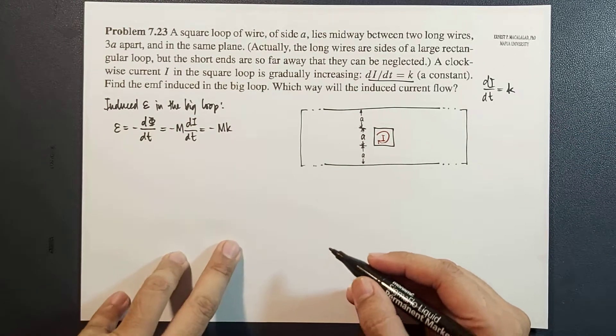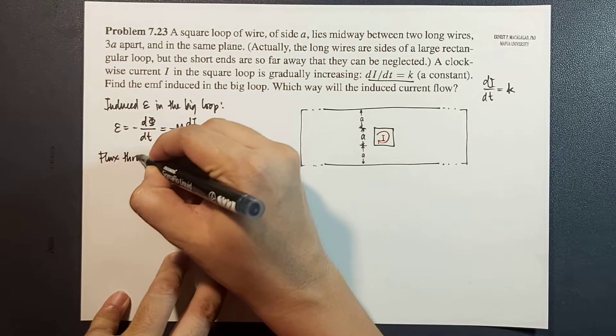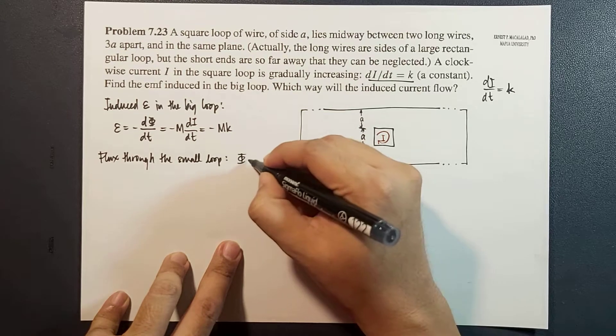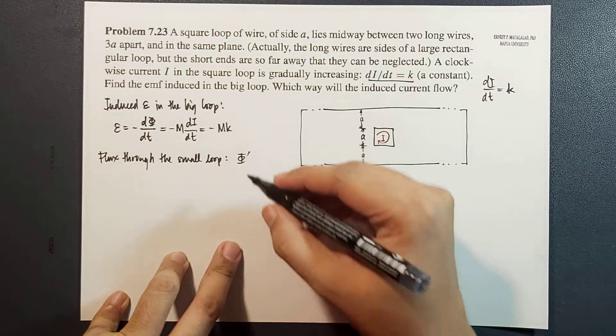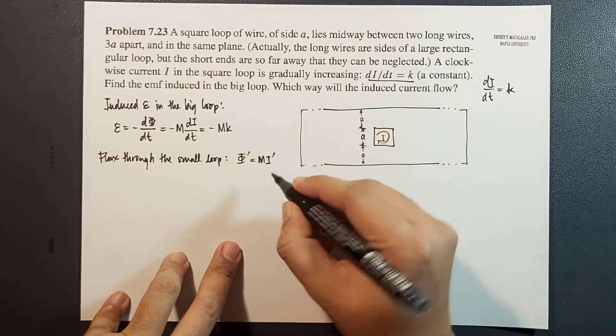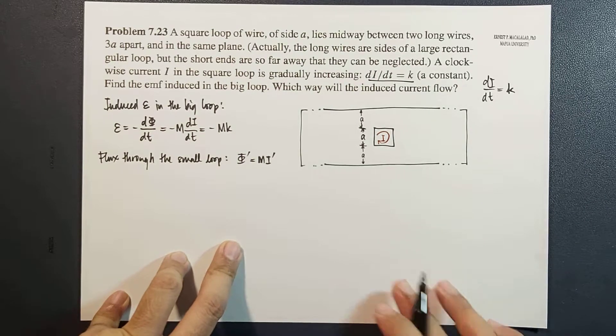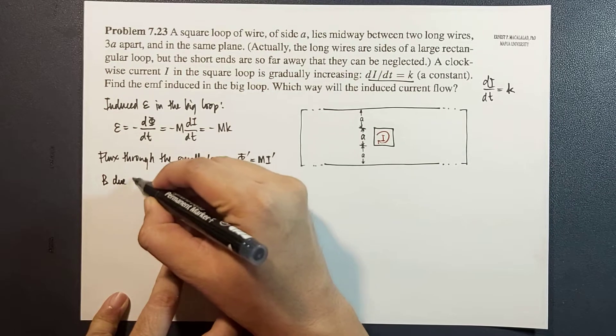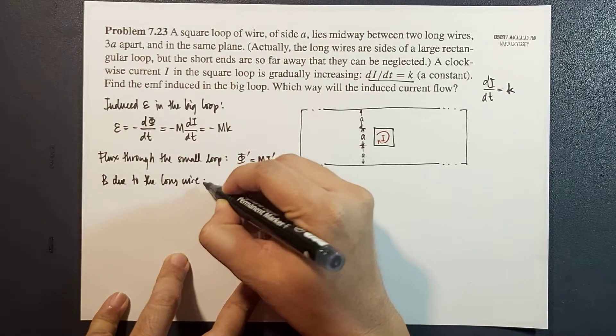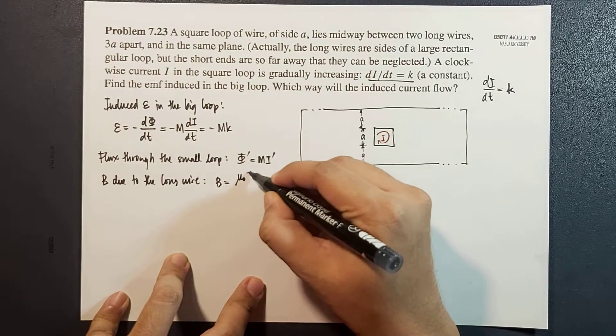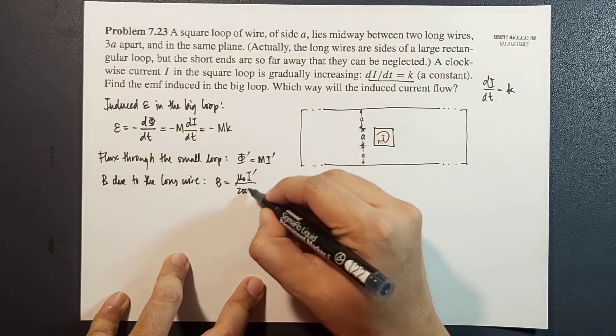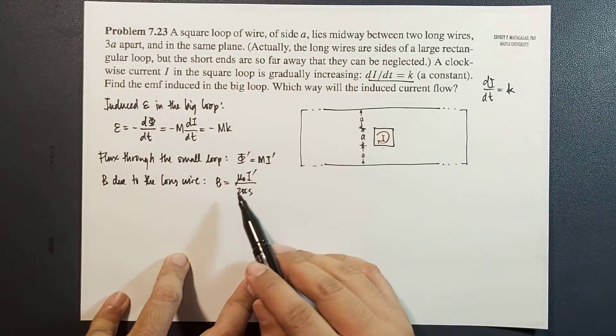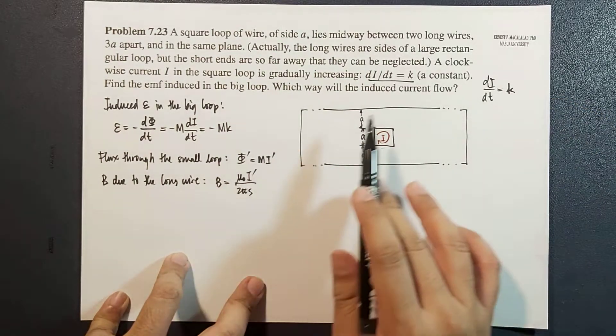Now, the flux through the small loop on the other hand, let's call it flux prime, is equal to M times I prime where I prime is the current induced in the big loop. The magnetic field due to the long wire is given by B equals mu naught I prime over 2 pi S, where S is the distance from the wire to your loop or to the point where you want to calculate your magnetic field.